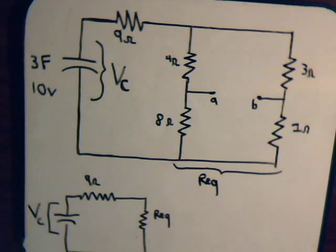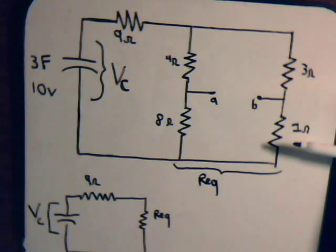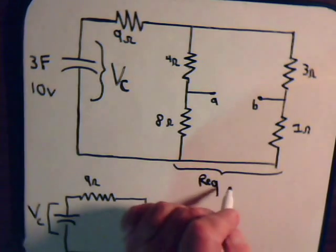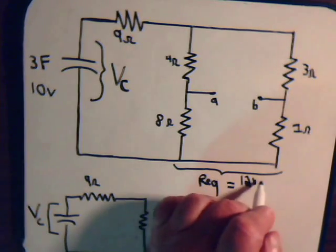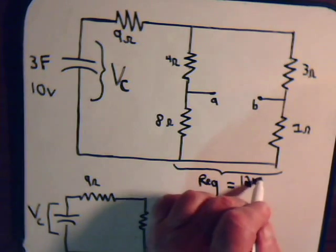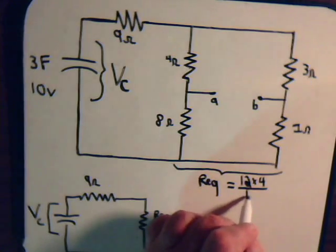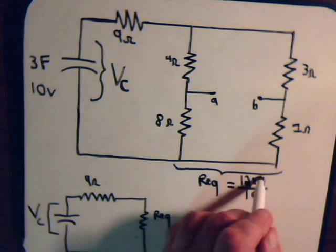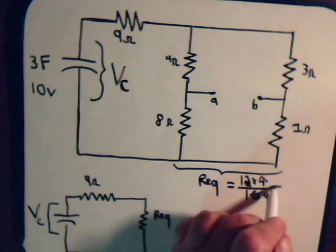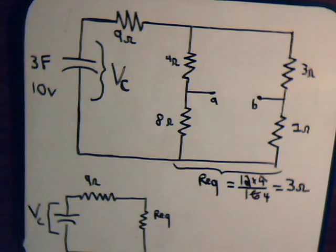Here we have 12 ohms in parallel with 4 ohms. So that will be 12 times 4, divided by 12 plus 4, which is 16. And 48 divided by 16 equals 3 ohms.